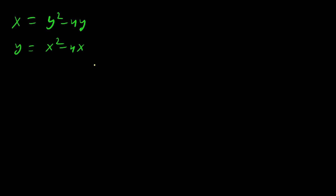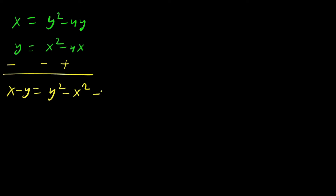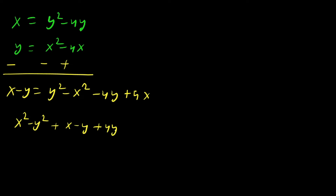Now if we subtract equation four from equation three, keeping signs in mind, we get x minus y equals y squared minus x squared minus 4y plus 4x. Bringing all terms to one side: x squared minus y squared plus x minus y plus 4y minus 4x equals 0.